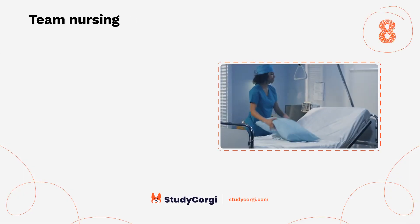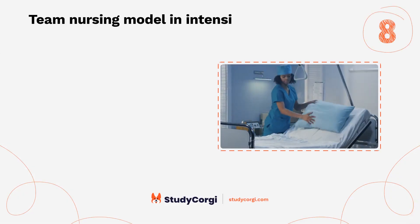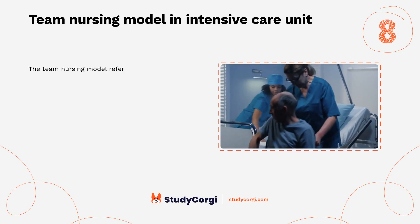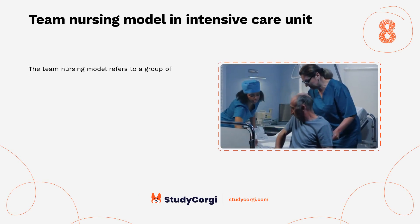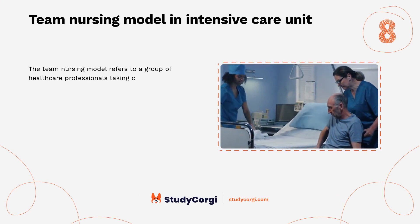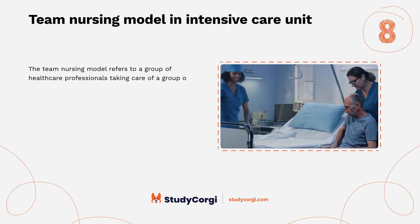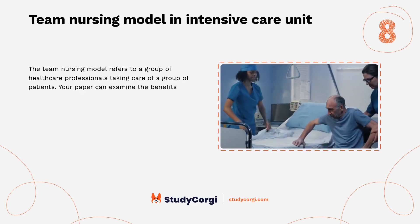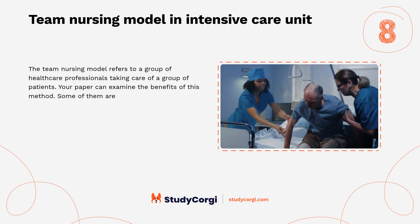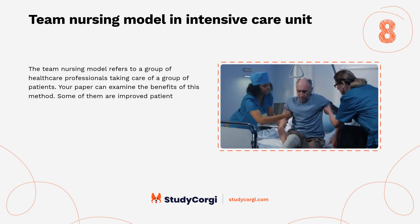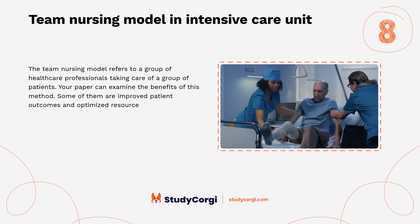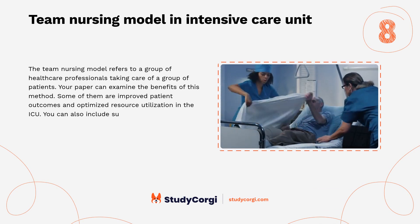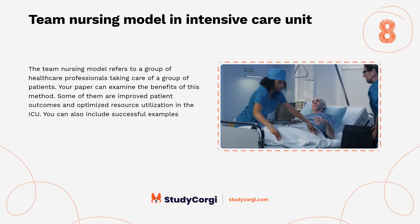Team Nursing Model in Intensive Care Unit. The Team Nursing Model refers to a group of healthcare professionals taking care of a group of patients. Your paper can examine the benefits of this method — some of them are improved patient outcomes and optimized resource utilization in the ICU. You can also include successful examples of team nursing.